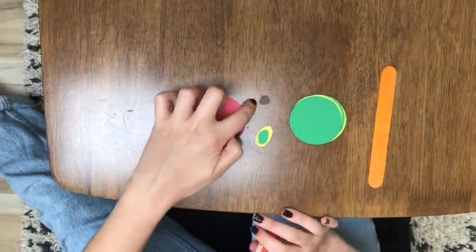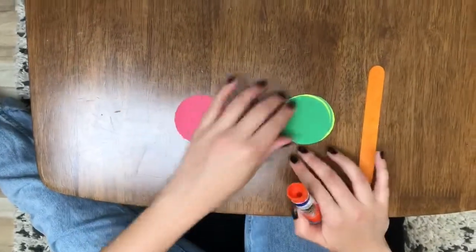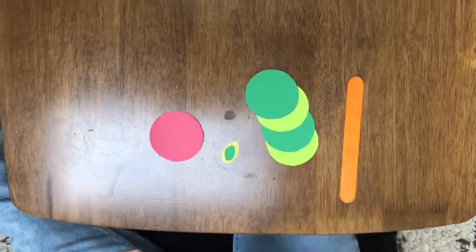You're gonna have your two eyes, the little nose, we're gonna have the head, you're gonna have four green circles, and then a popsicle stick.